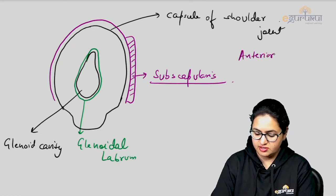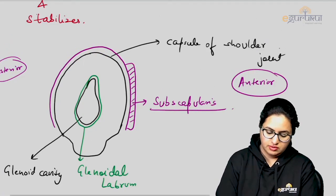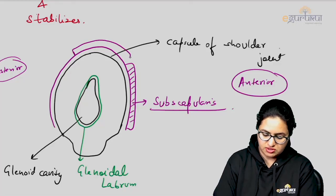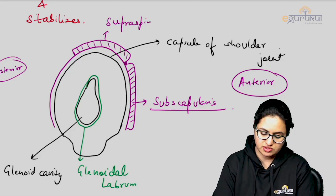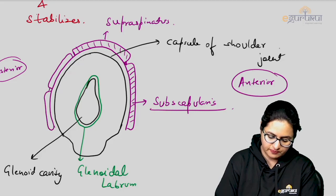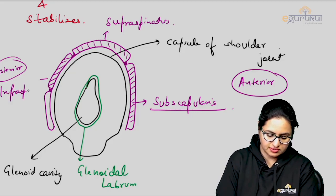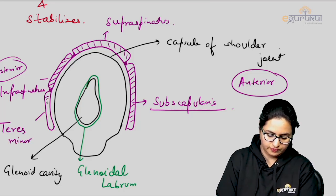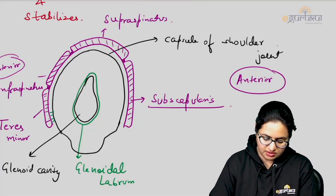Towards the posterior aspect, on the superior side the muscle tendon present is supraspinatus. On the posterior aspect we have infraspinatus and teres minor. All these muscle tendons are blending with each other as well as with the capsule.